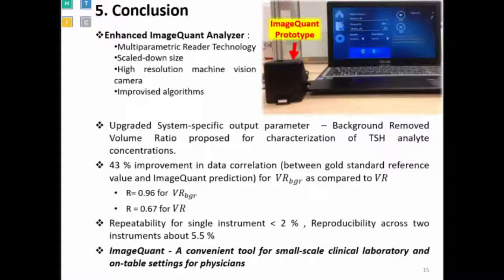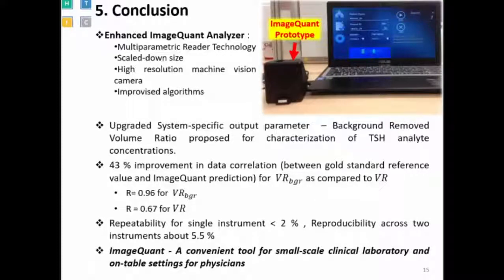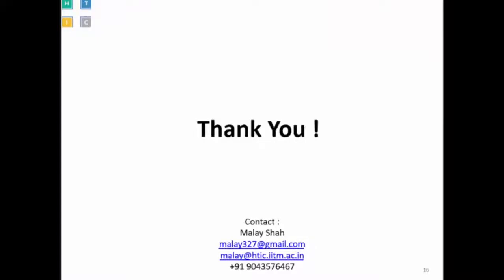In conclusion, the prototype instrument is very small compared to standard tabletop instruments and improves dynamic range by 43 percent. Results are acceptable in terms of both repeatability and reproducibility. We are proposing the ImageQuant instrument as a convenient tool for small-scale clinical laboratories — for example, Tier 2 and Tier 3 labs in India — for different tests. This test platform will be extended to additional tests on the same instrumentation, and can also be used in tabletop settings at physician offices. I welcome any questions.